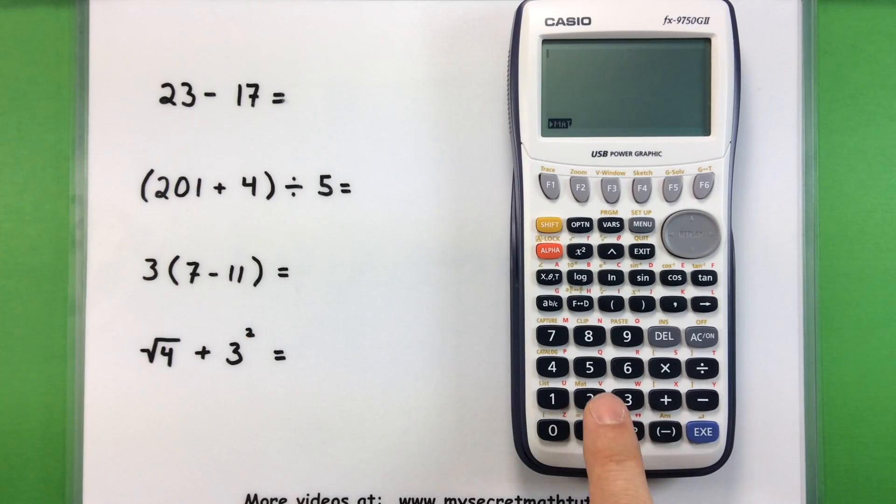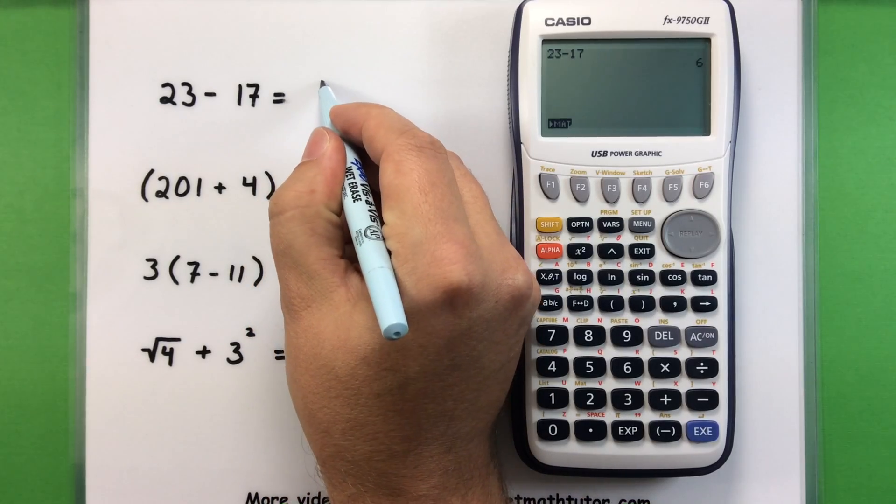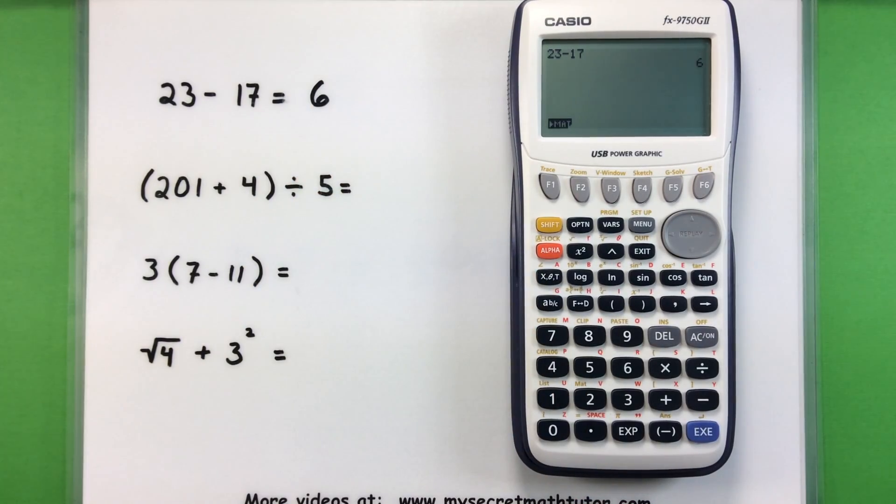All right, we need to do 23 minus 17. I can see these numbers are printed on the buttons themselves, so I'm using the primary features to just type in 23 minus 17. And to actually have it do those computations, I'll press the execute button down here, and I get an answer of 6. So it's taking care of those calculations and told me, hey, the answer is 6.